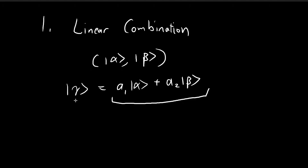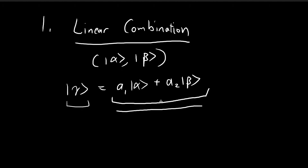So you can see here I've expressed gamma as a linear combination of alpha and beta. Whenever you see the term 'linear combination,' just keep in mind it's referring to this process of multiplying scalars and then adding them up.